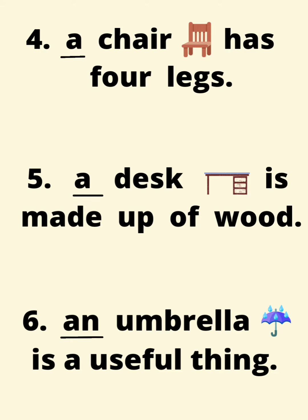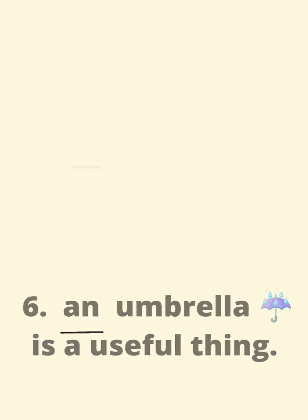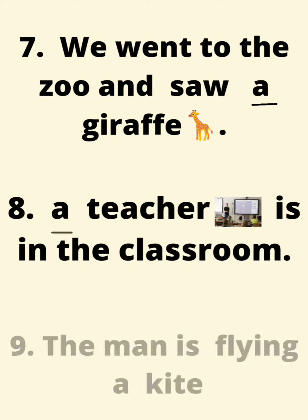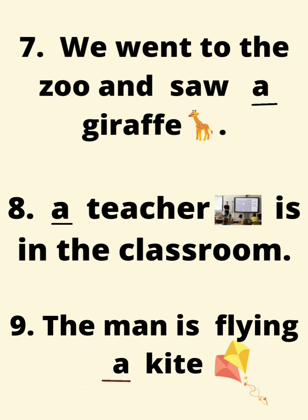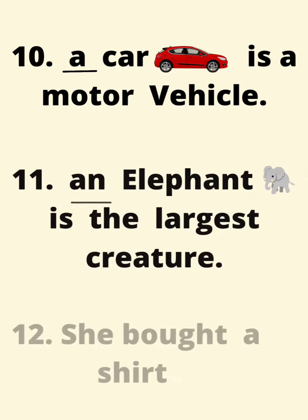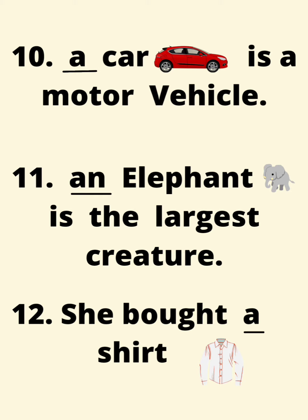An umbrella is a useful thing. We went to the zoo and saw a giraffe. A teacher is in the classroom. The man is flying a kite.